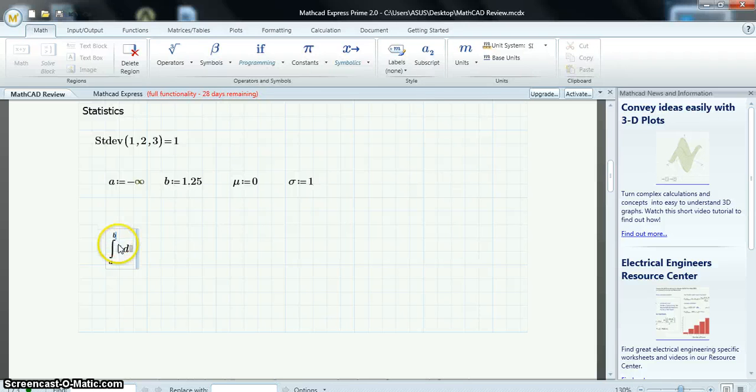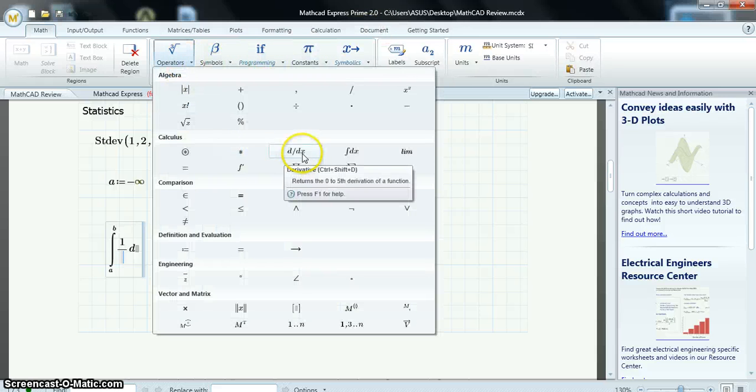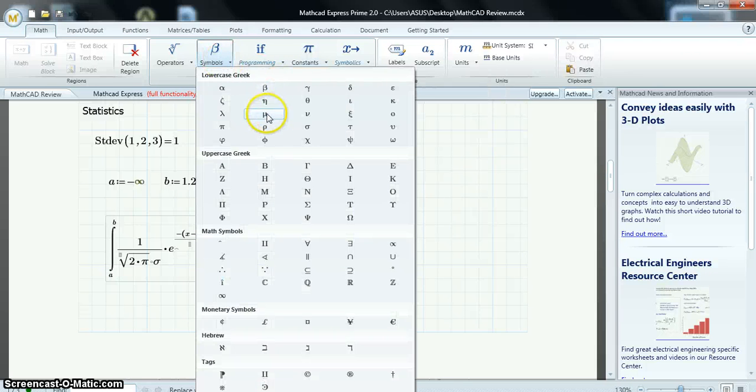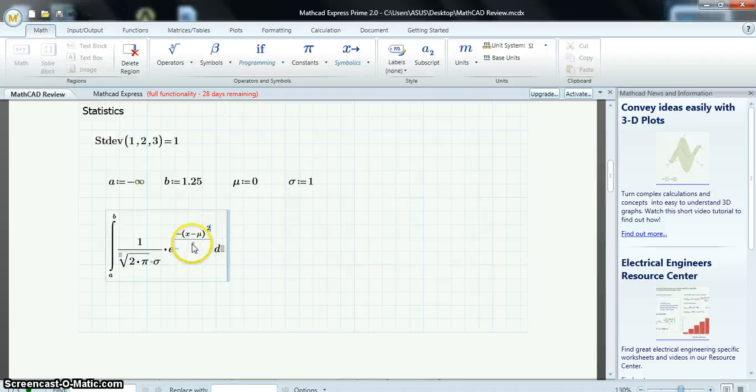And, Integral. Limits will be A and B. Fraction, 1 over square root 2 times pi sigma. And, I'll have times E. Fraction, and the exponent. X minus Mu. This will be squared. And, we have 2, 2 times sigma squared. Dx equals, and there's the answer.